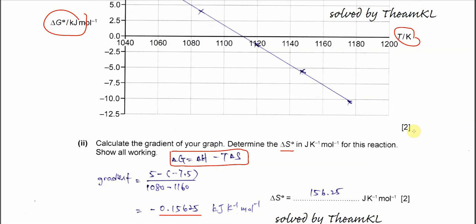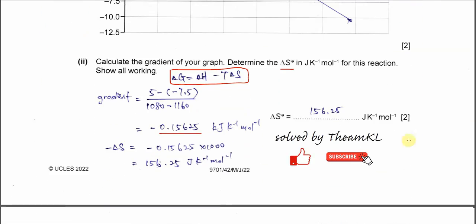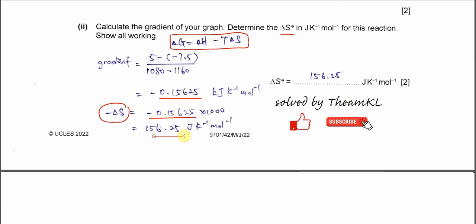we know that negative delta S is the gradient, because it is a Gibbs versus T plot. So negative delta S equals this gradient value, meaning delta S is approximately 156.25 joule per kelvin per mole. Remember the gradient must be multiplied by 1000 to convert from kilojoule to joule. The result is roughly 156 or 160 depending on your graph.